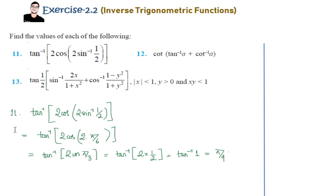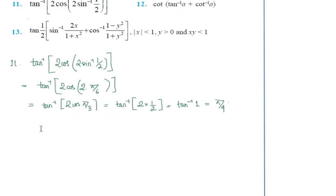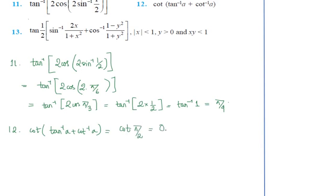Now coming to question 12: find the value of cot of (tan inverse a + cot inverse a). You should know that sin inverse a + cos inverse a = π/2, and similarly tan inverse a + cot inverse a = π/2 for all a in the domain. So that gives us cot(π/2), and cot(π/2) is 0. That is the answer — pretty easy.